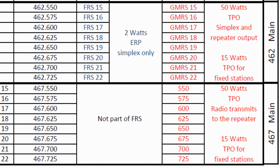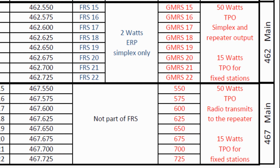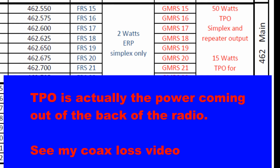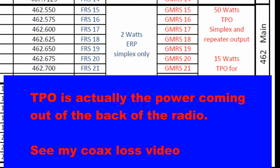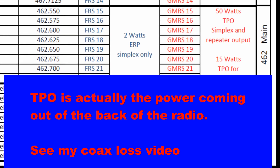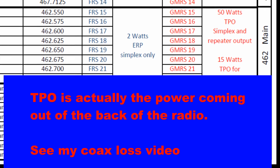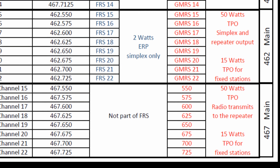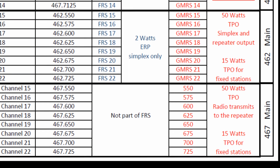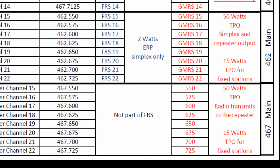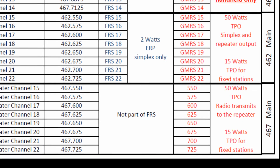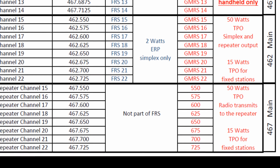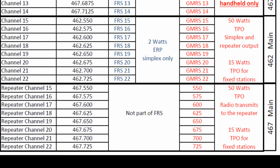These main channels have a maximum power output of 50 watts. This is transmitter power output — the power going into the antenna — and since you can use higher gain antennas, your effective radiated power can be more than 50 watts. There is a 15 watt TPO limit for fixed stations, but fixed stations probably aren't what you think they are and you probably aren't using your station as a fixed station. I will make a video on this later, so the way you're going to use your radio, you are limited to 50 watts, not 15.